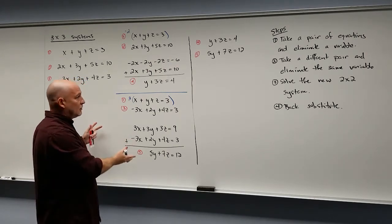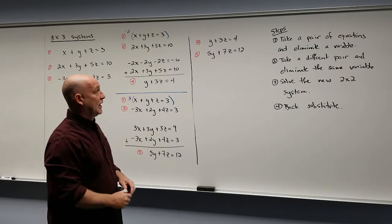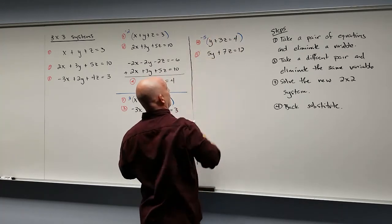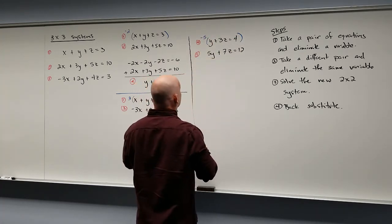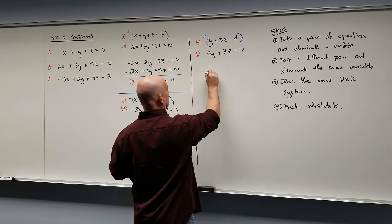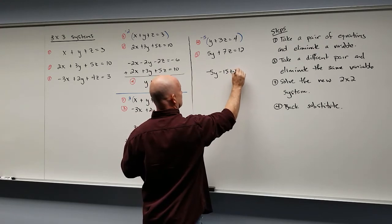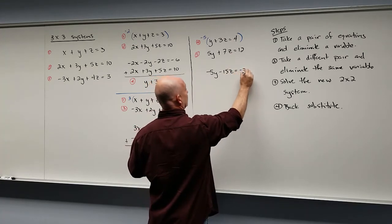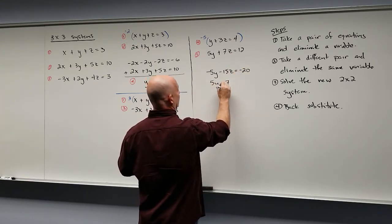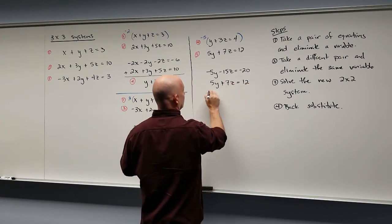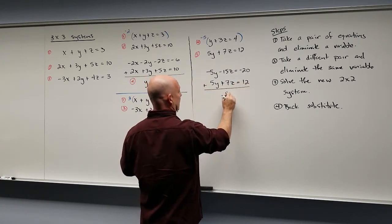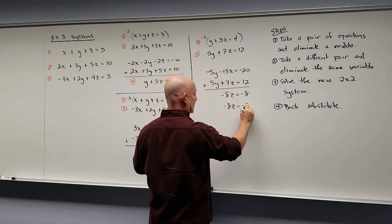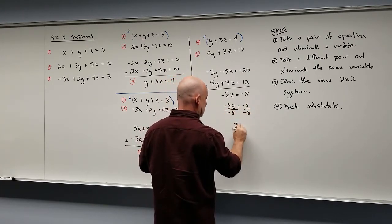I generally suggest keeping with the addition or elimination method. I'm going to take the first equation and multiply it by negative 5 to get rid of the y's. That gives negative 5y minus 15z equals negative 20. Adding with 5y plus 7z equals 12, we get negative 8z equals negative 8. Dividing, z equals 1.